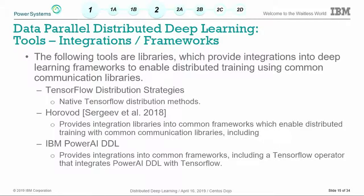The next thing we'll look at are framework integrations that give you access to these communication libraries. The first is TensorFlow's distribution strategies — their new native method for facilitating distributed deep learning, which is getting a lot better. You also have Horovod — it is not itself a communication library, just an integration into frameworks like PyTorch and TensorFlow that gives you access to MPI and NCCL. They also do work optimizing communications, like scheduling communication at the same time as computation. IBM PowerAI DDL also offers TensorFlow operators and PyTorch integrations.